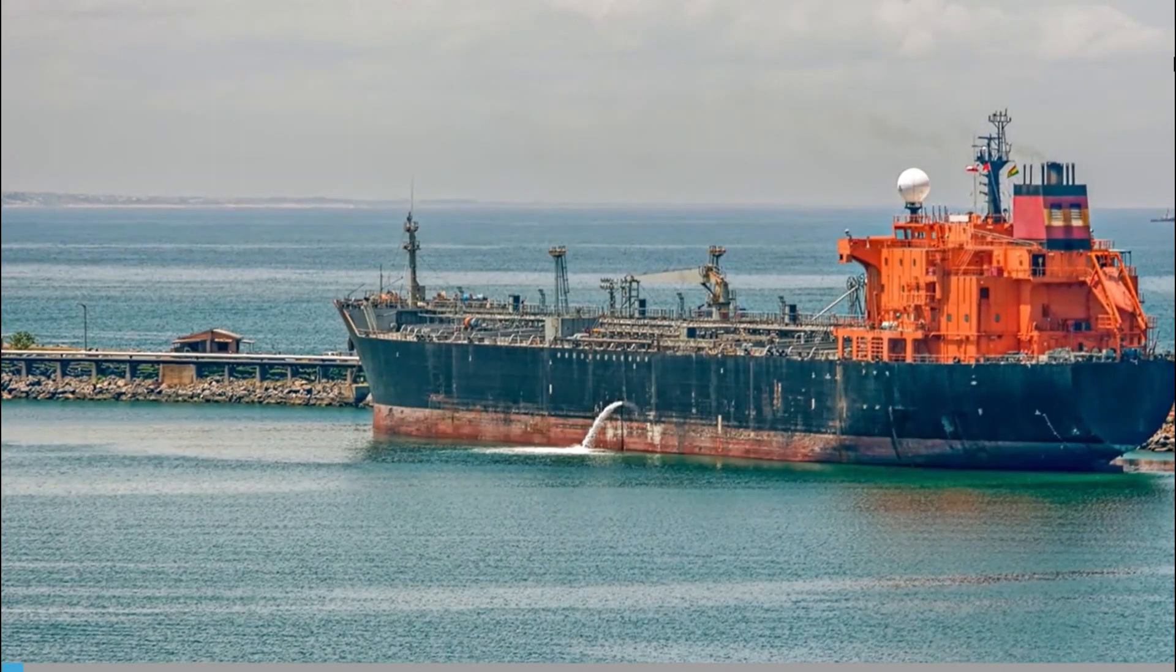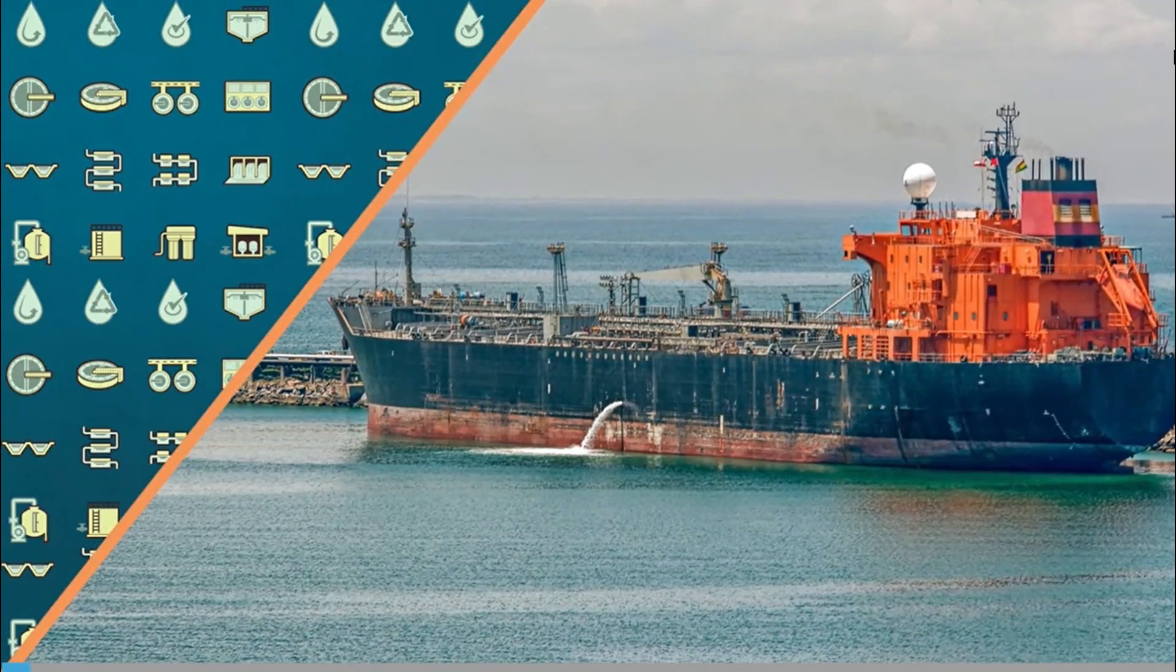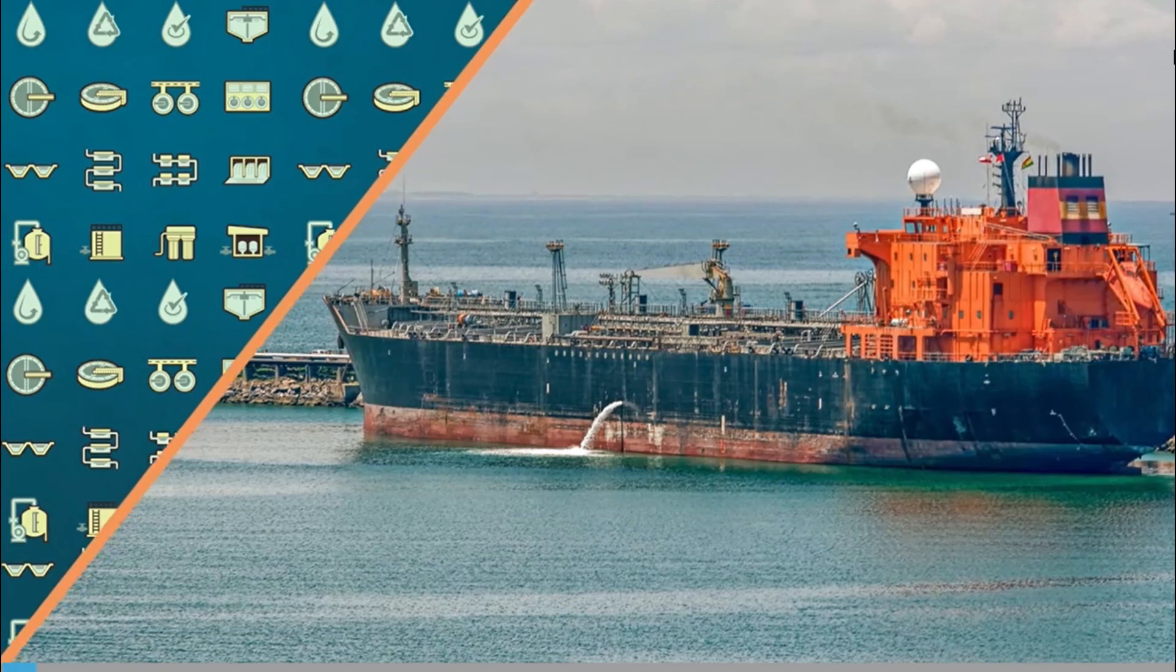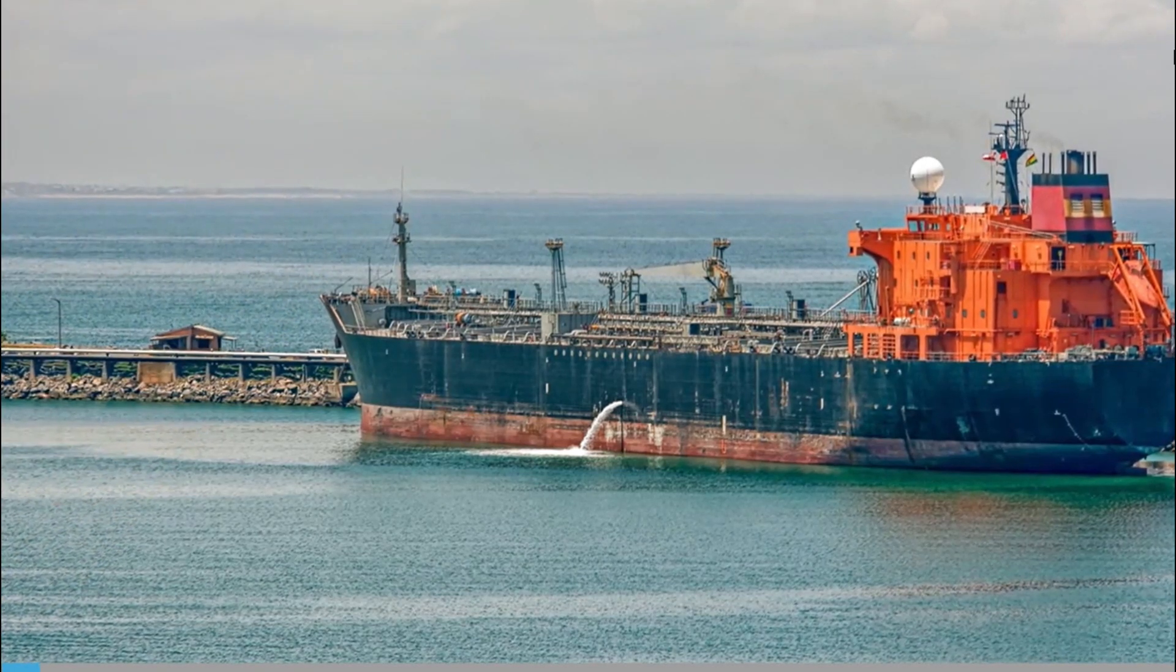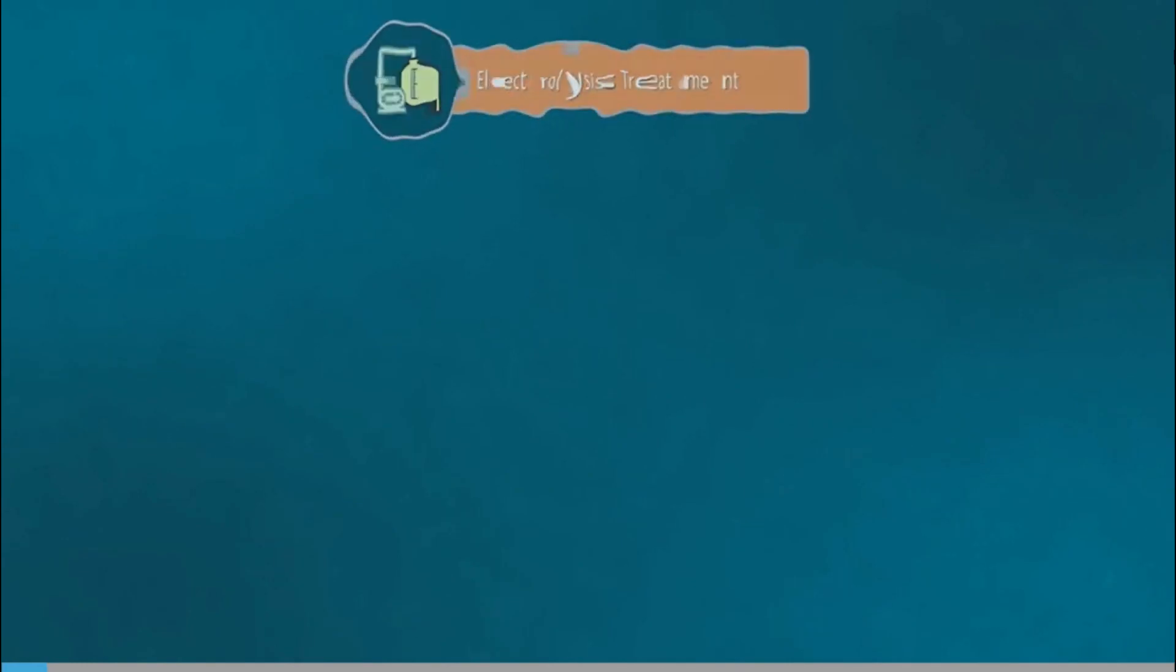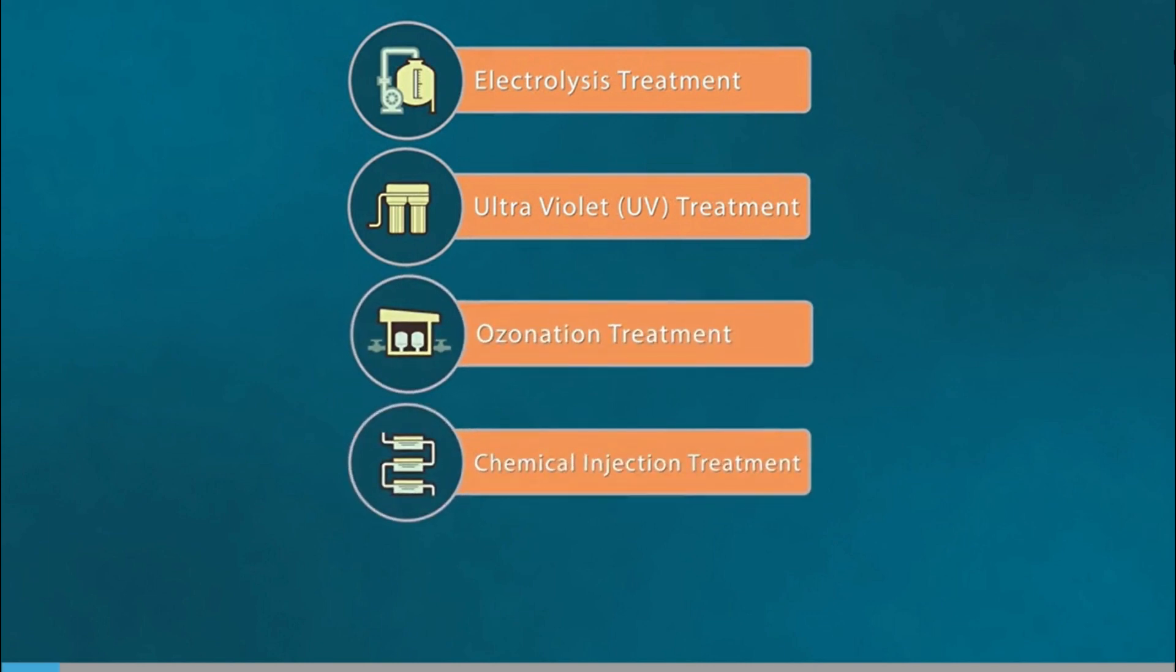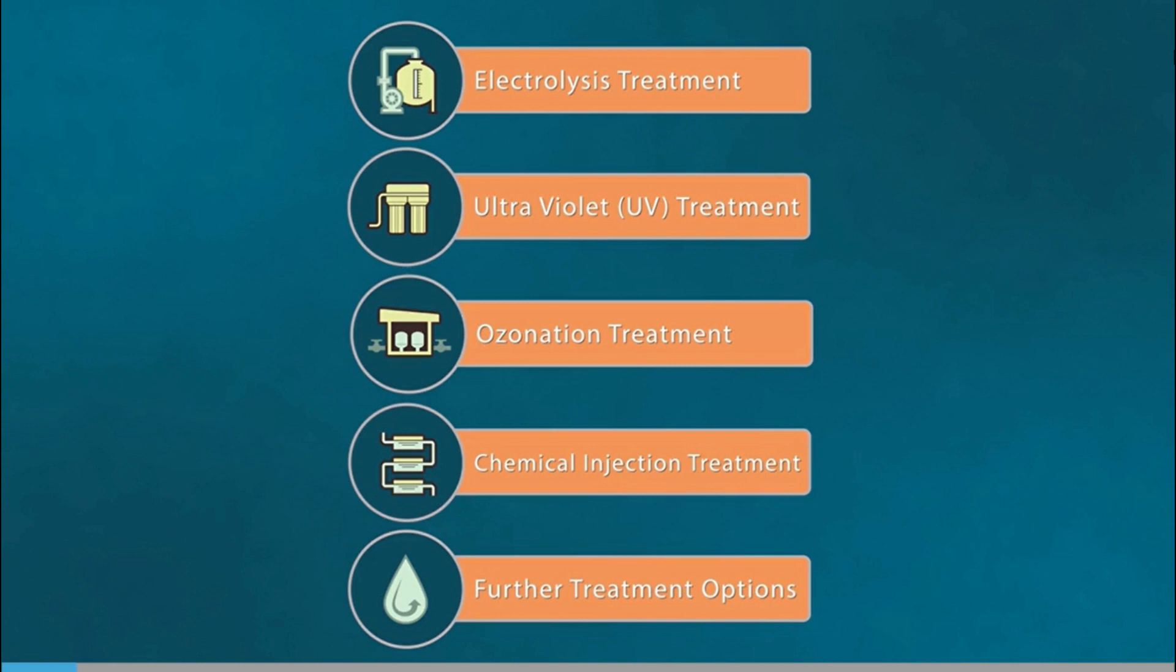There are a wide variety of treatment options for ballast water. We shall briefly consider the main treatment technology options. The main technologies utilized in ballast water treatment systems are electrolysis treatment, ultraviolet treatment, ozonation treatment, and chemical injection. Most of these technologies are supplemented by filtration, either classical static filtration or dynamic filtration. Each technology has advantages and disadvantages.